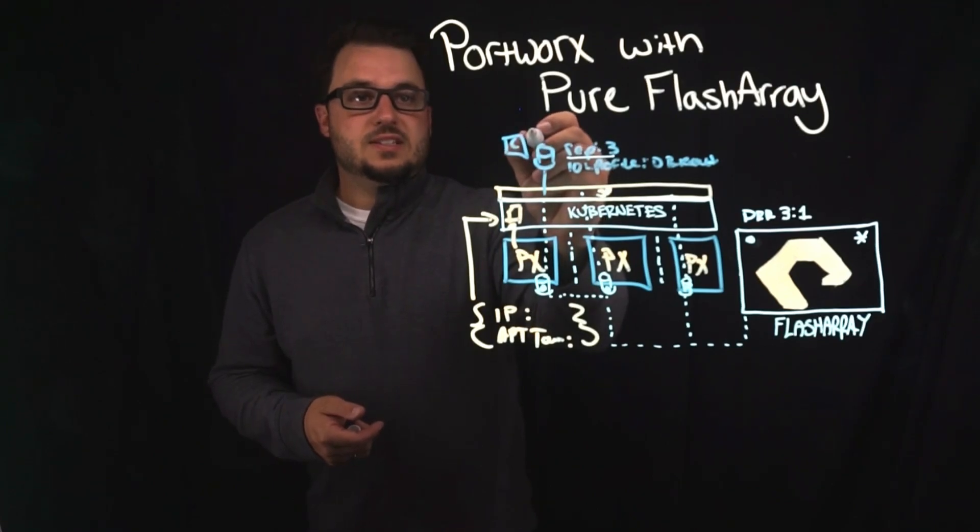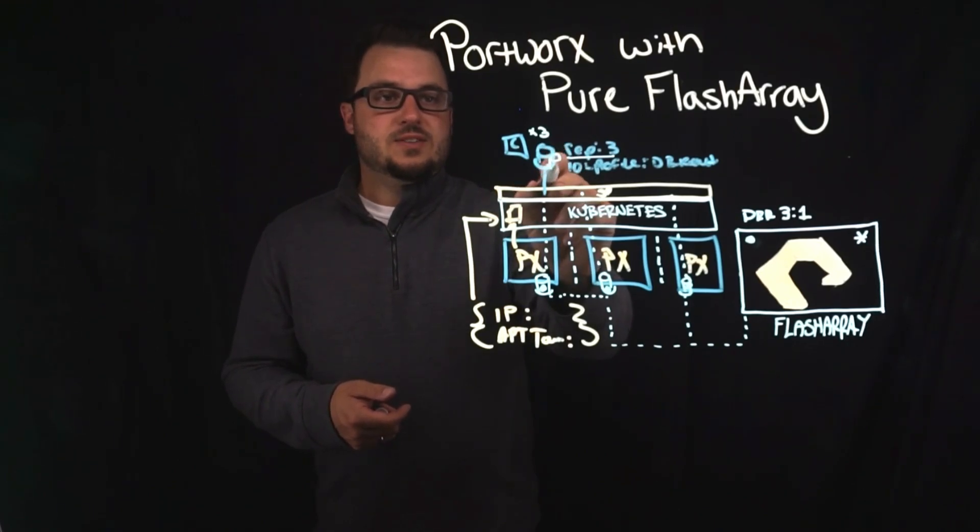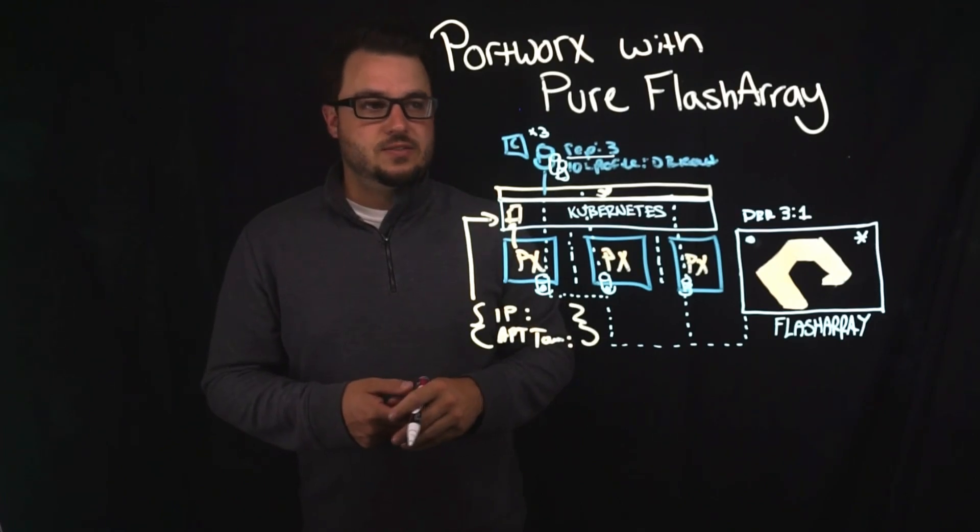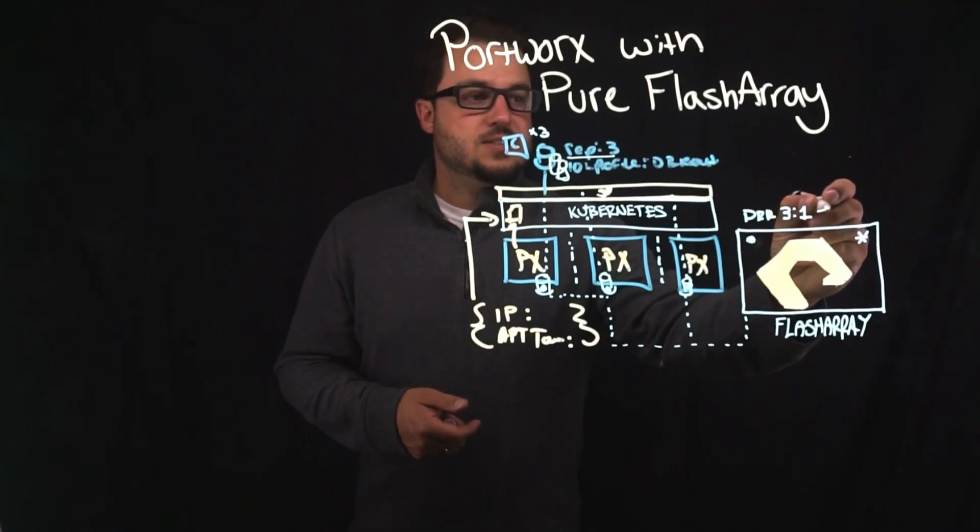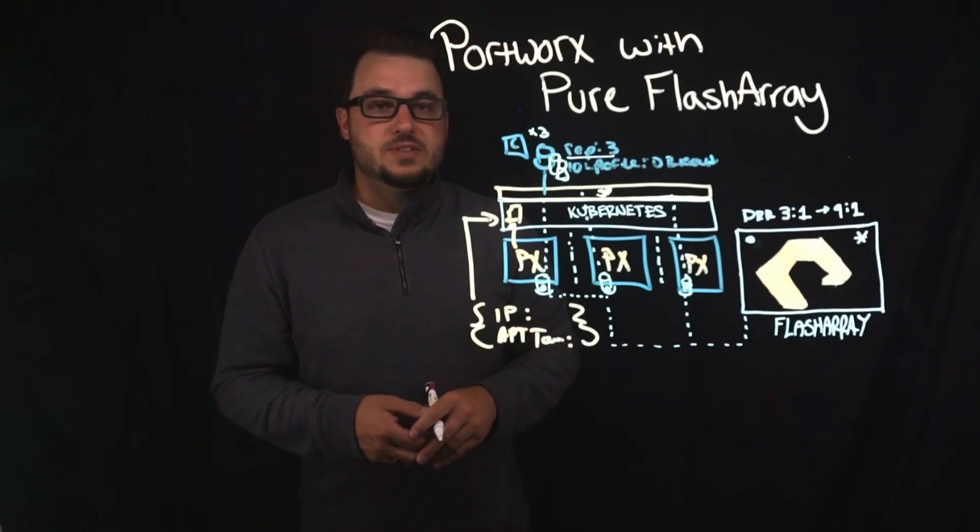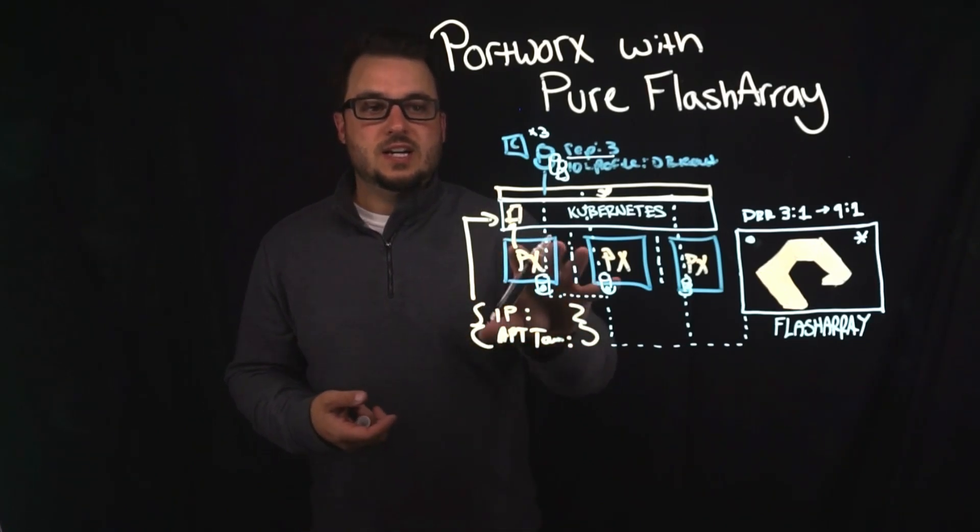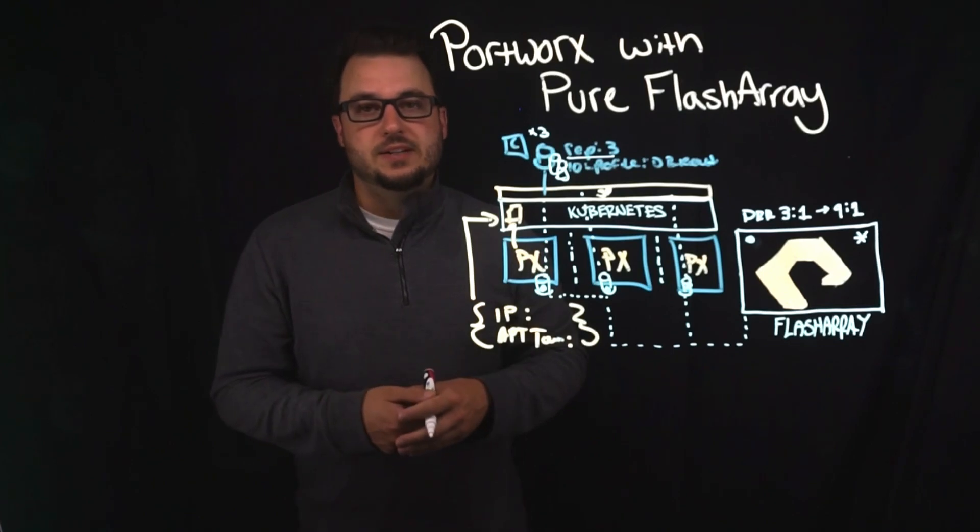Now if we scale this container out by say three more, and each one of these then uses a whole another volume, and each one uses a replication factor of three, we can see these DRRs go all the way up to somewhere around nine to one. And so this is one of the really great benefits of using flash array and the features underneath it in combination with the container granularity of Portworx on Kubernetes.